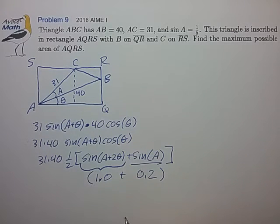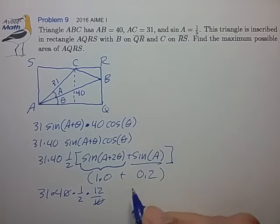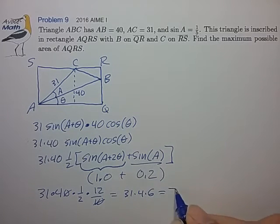And we can add these two to find that the result we're looking for is 31 times 40 times one-half times 1.2. That's 12 over 10. Cancel that with a zero - that's 31 times 4 times 6. And that's 744. And I think that's the answer they were looking for.